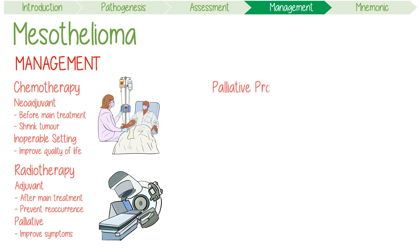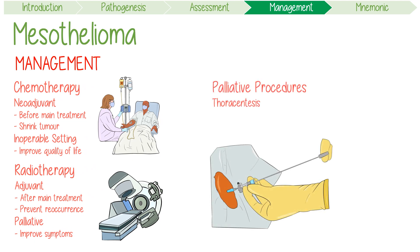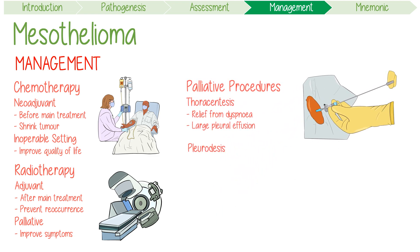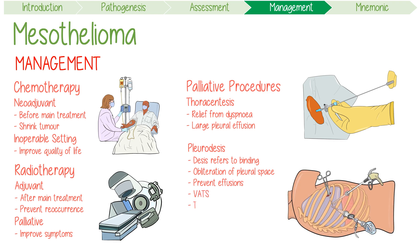Finally, let's consider some palliative procedures. A thoracentesis can be performed to provide temporary relief for patients suffering from dyspnea due to a large pleural effusion. Secondly, a pleurodesis can be performed. The suffix 'desis' refers to binding two things together — in this case, binding the visceral and parietal lung pleura. A pleurodesis is essentially defined as the artificial obliteration of the pleural space. This prevents effusions and reaccumulation of pleural fluid. One of the most effective methods is performing a VATS procedure and releasing talc — the substance used in talcum powder — into the pleural space, which irritates and sticks the parietal and visceral pleura together.